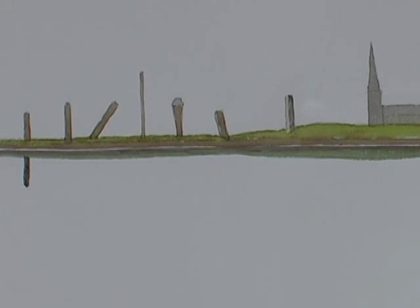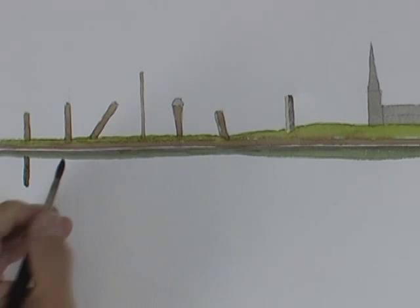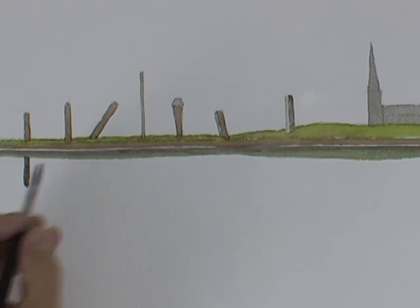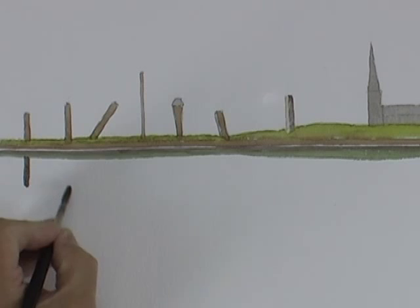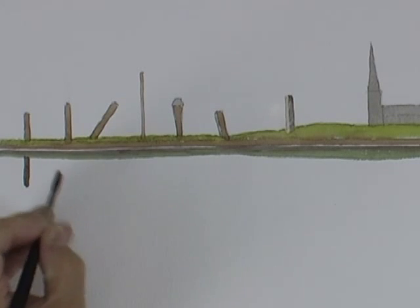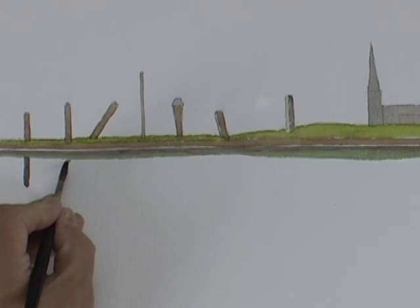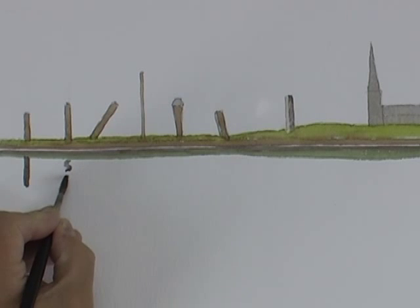Now if the water gets a little bit ruffled with a few waves in it, then so does the reflection. But it's still vertical, essentially. Even though it twists and turns a little bit, maybe broken up here and there, it still follows this vertical line below the post.